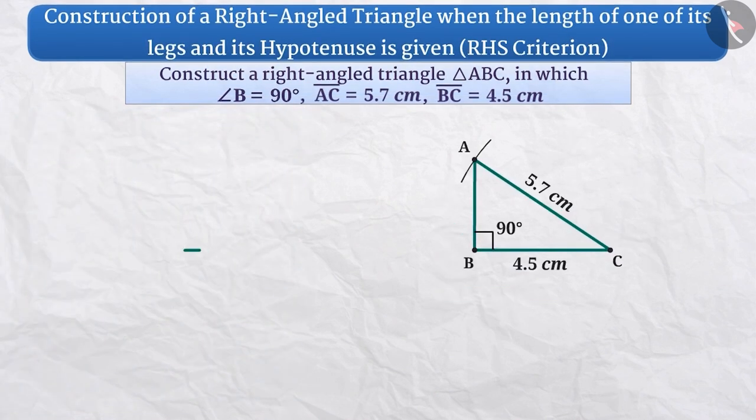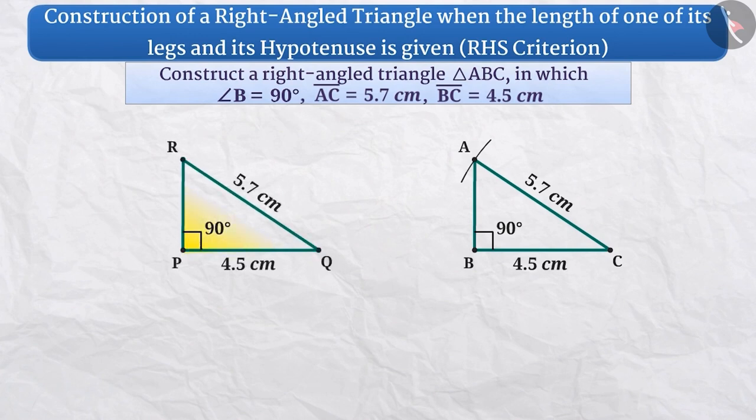Similarly, if we construct a triangle RPQ in which angle P is equal to angle B is equal to 90 degree, hypotenuse RQ is equal to AC is equal to 5.7 cm and the side PQ is equal to BC is equal to 4.5 cm, then the obtained triangle RPQ will be congruent to triangle ABC.